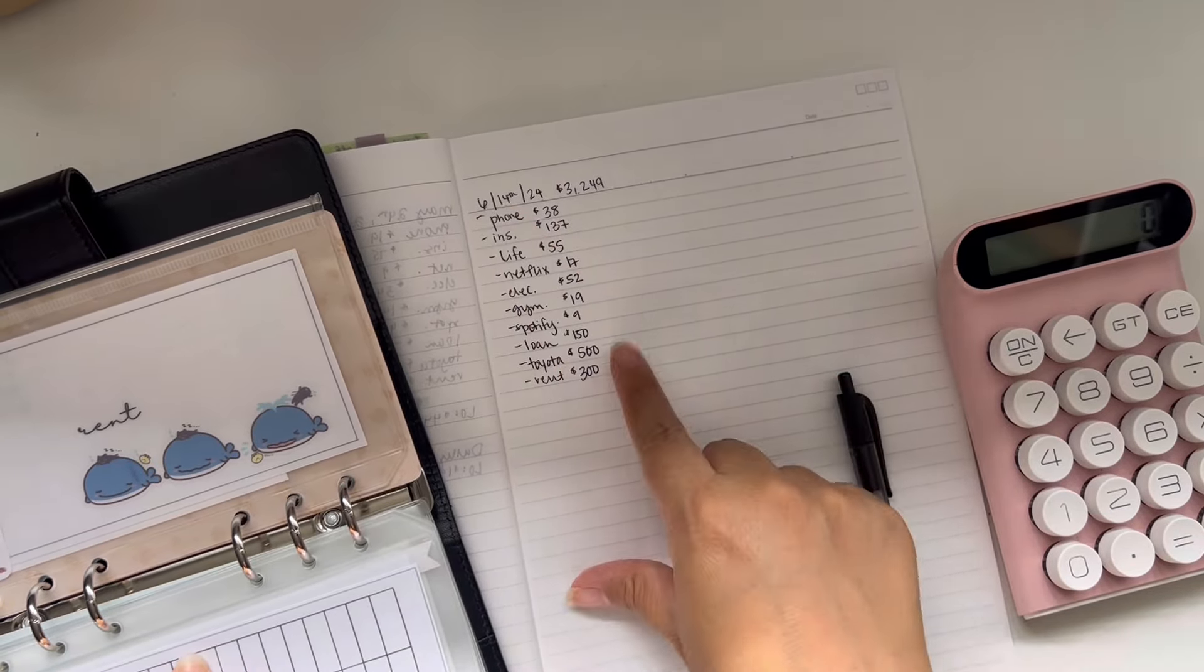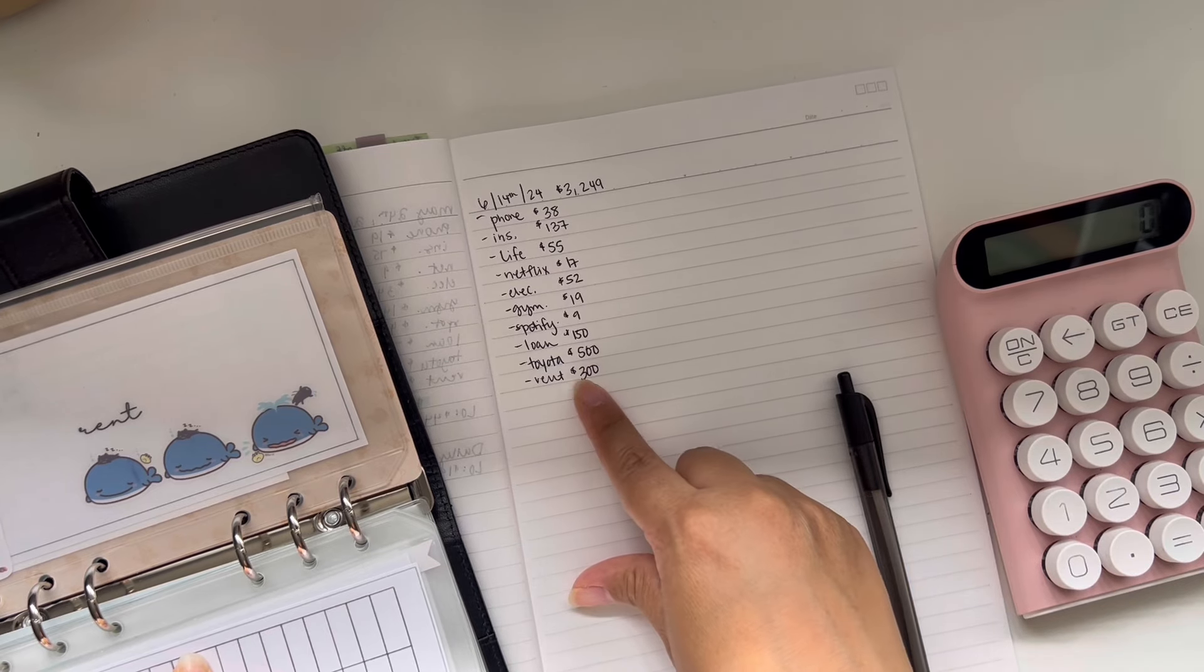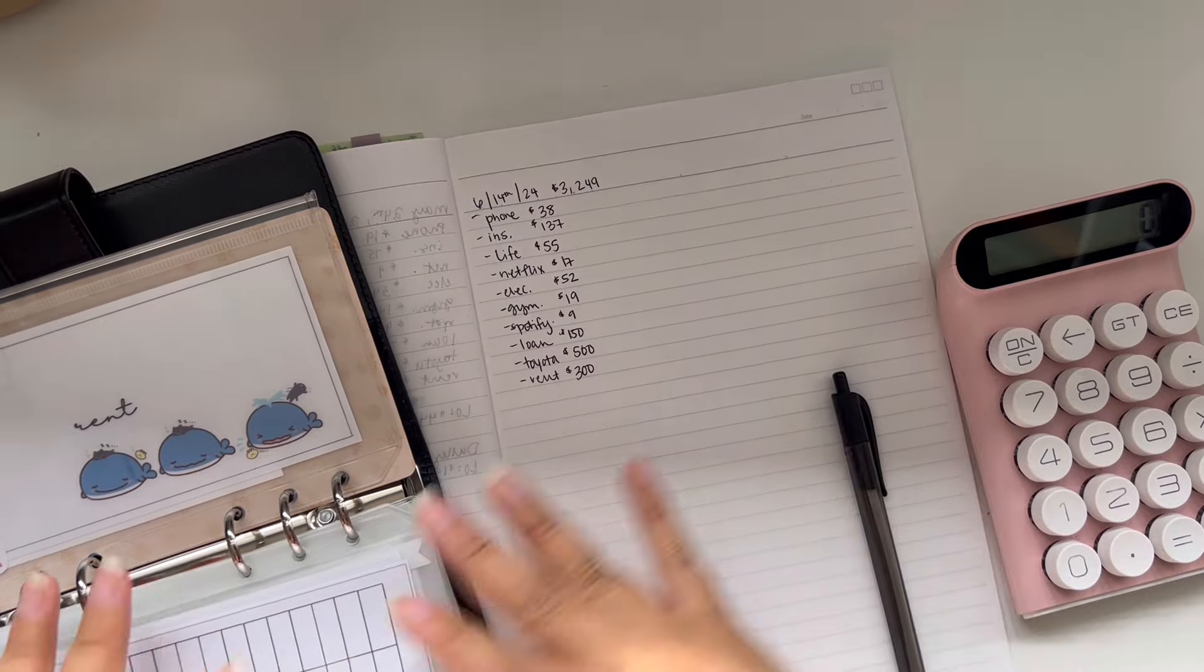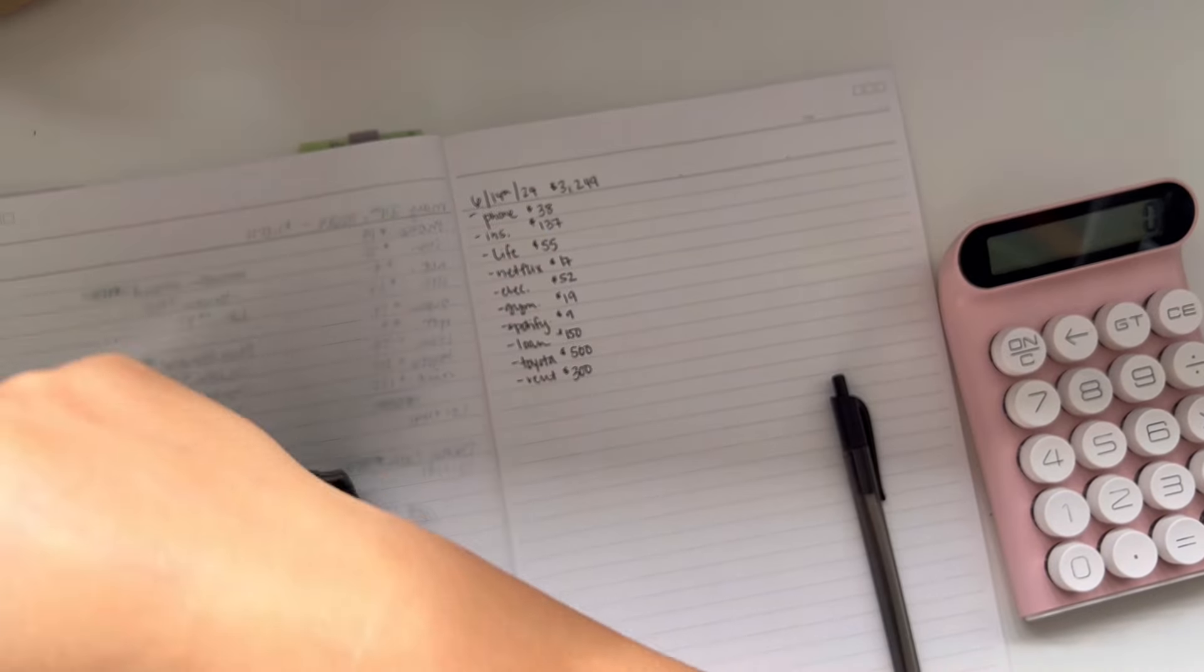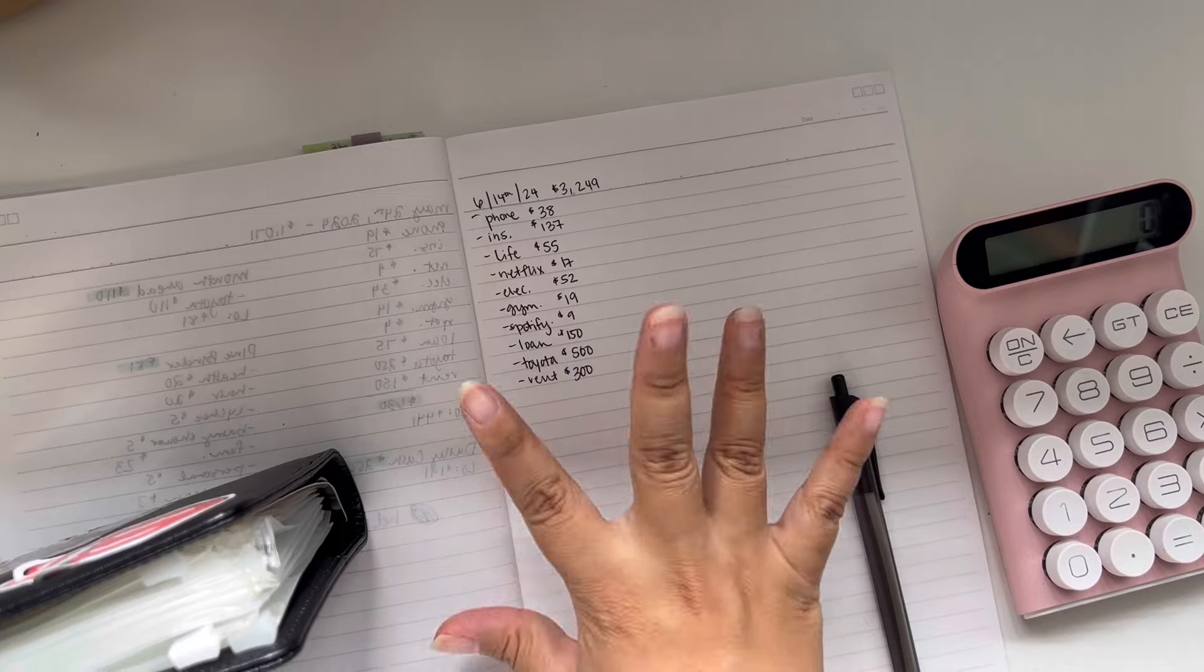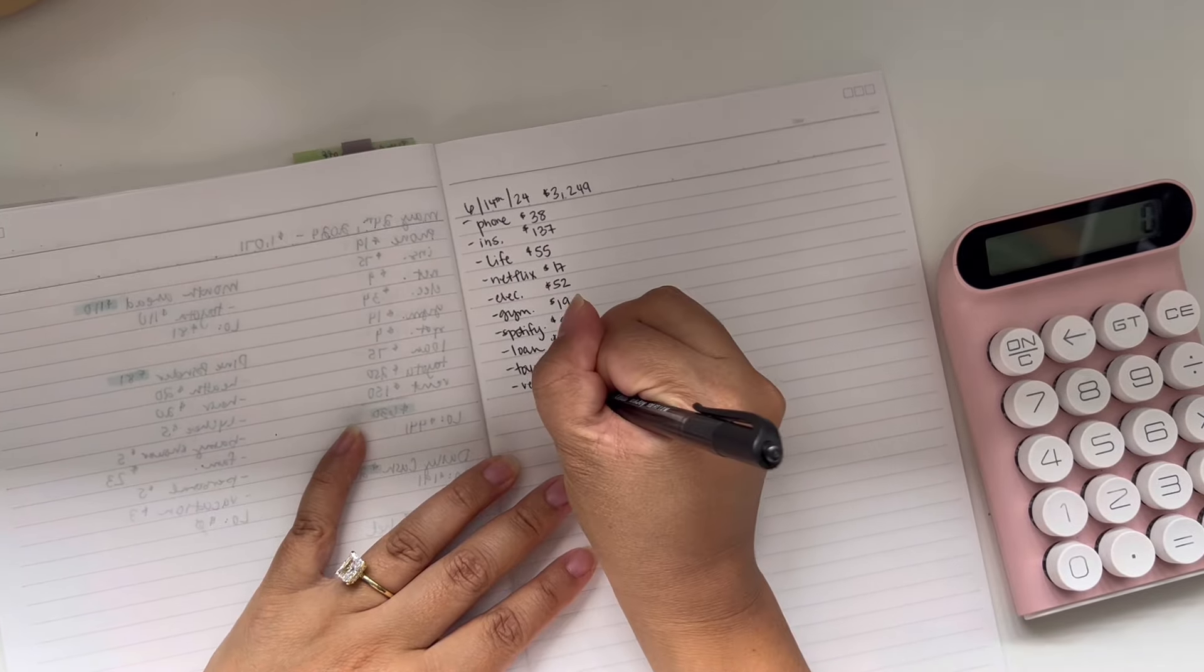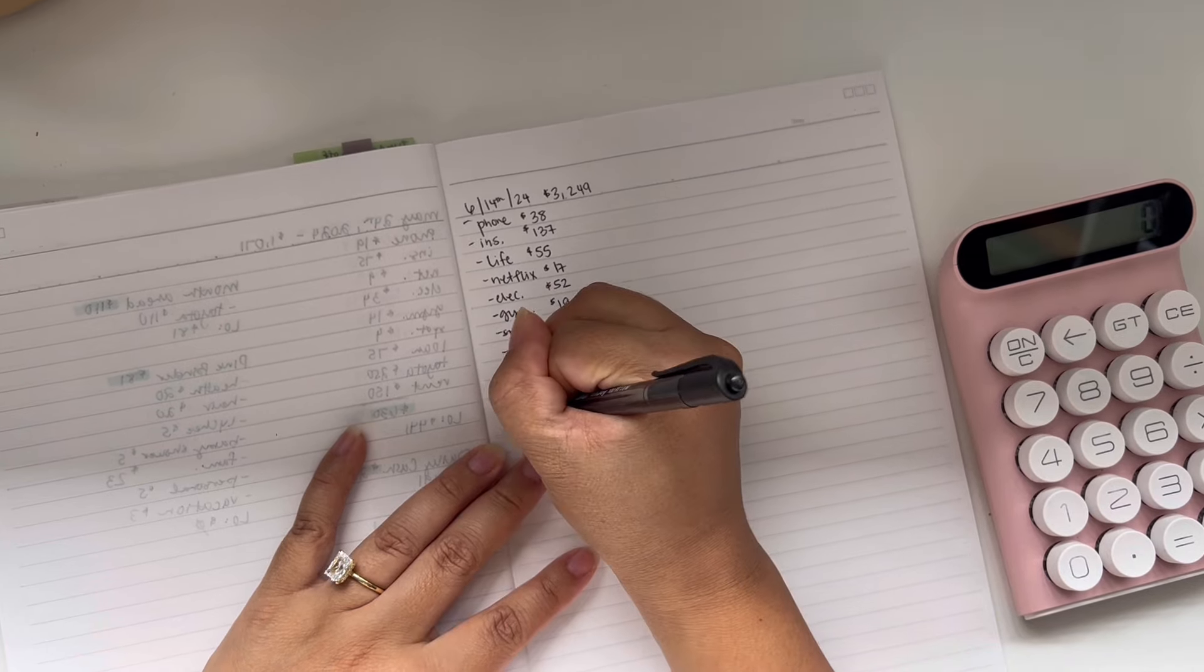Toyota. I do like to stuff Toyota all at one time. So I do $500. Our payment is not $500. It is less than $400. It's $300 something around there. But I always love to stuff extra because I want to pay more towards principal. And then rent I'll do $300. And then on the next paycheck, since I won't stuff anything into Toyota, I'll stuff the remaining $800 into rent.